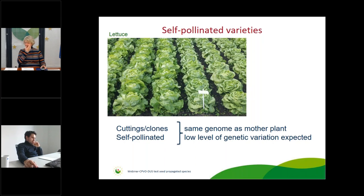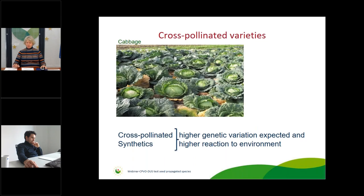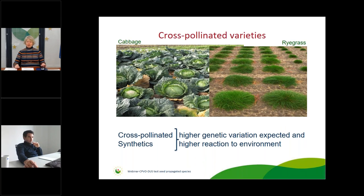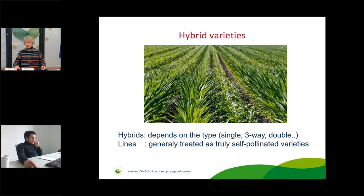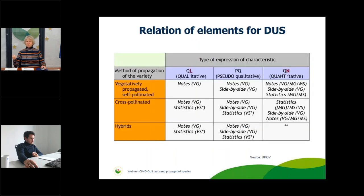For self-pollinated varieties like lettuce, we expect a low level of genetic variation. For cross-pollinated varieties such as cabbage or ryegrass, there is by nature a high genetic variation and higher reaction to the environment. For hybrid varieties, we also need to take into account the type of propagation when assessing uniformity — in other words, what can we fairly expect from a certain type of variety? With information on the type of expression of characteristic, method of propagation, and features of propagation, you can see what different assessments the expert performs.